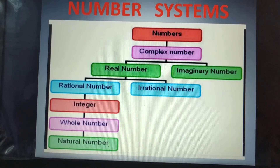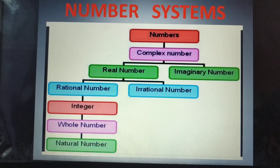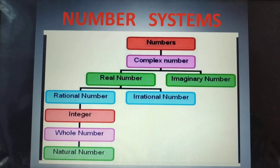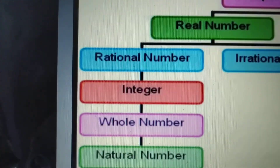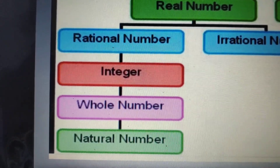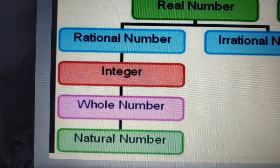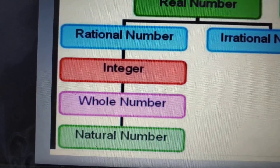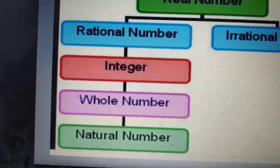Dear children, initially you learned the counting numbers such as 1, 2, 3, etc. That set is known as the set of natural numbers — consisting of 1, 2, 3, 4, ... till infinity. The set of natural numbers along with the digit 0 is called the set of whole numbers.